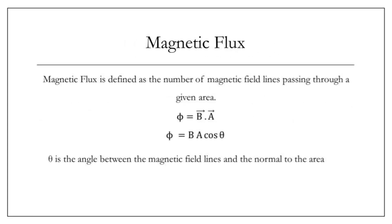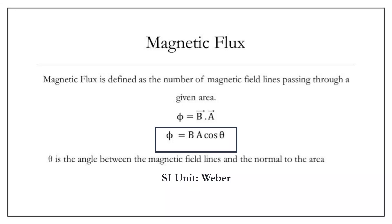Magnetic flux is defined as the number of magnetic field lines passing through a given area. It is denoted by the symbol phi. The magnitude of the magnetic flux is given by the product of the magnetic field, the area, and cos theta, where theta is the angle between the magnetic field lines and the normal drawn to the area.